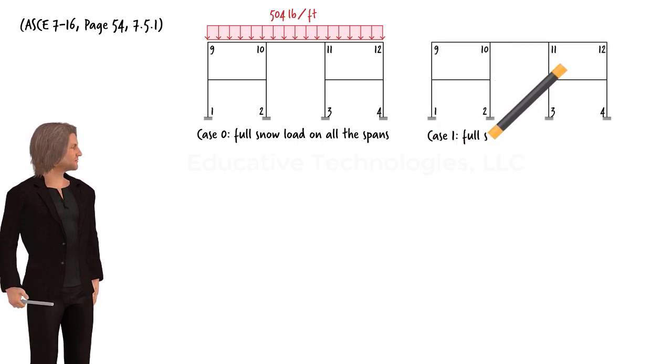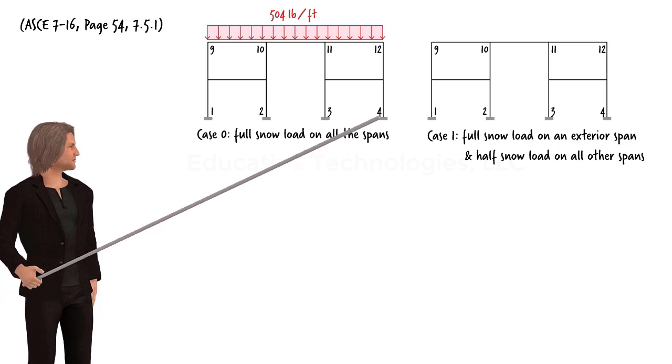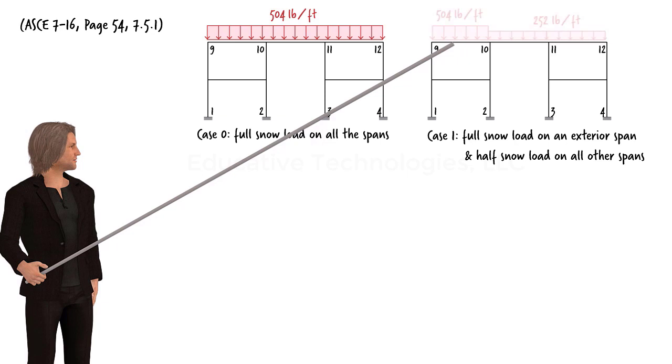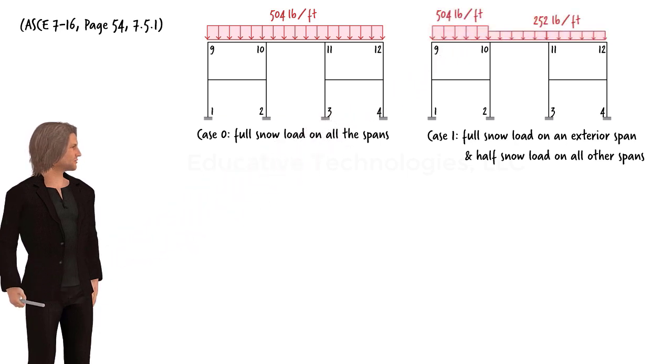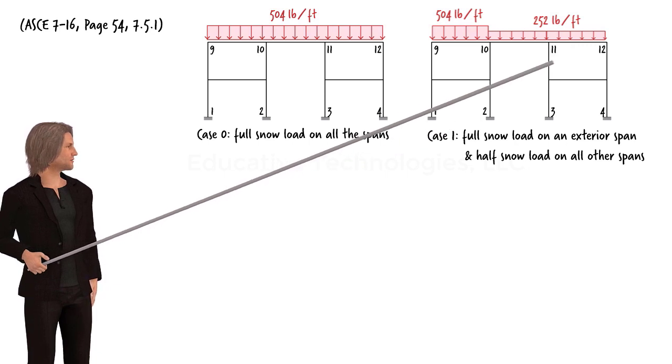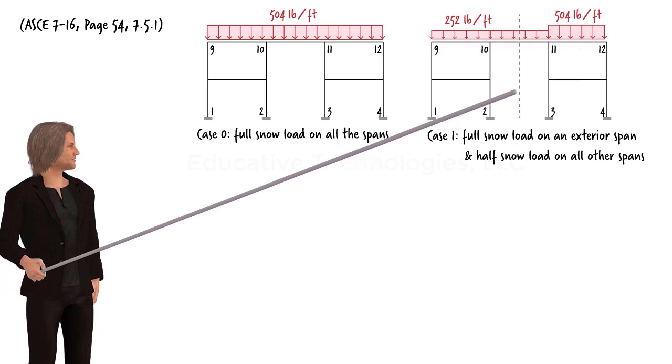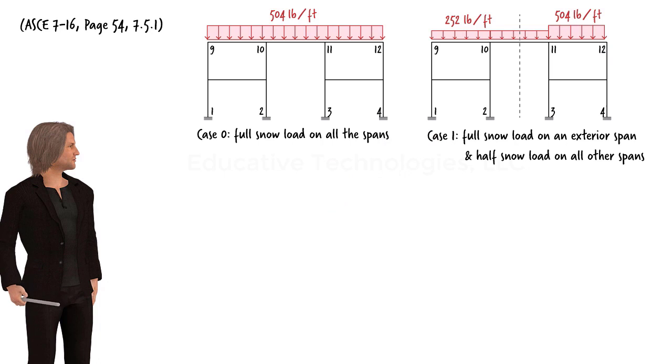Case 1. Full snow load is present on an exterior span, while all other spans carry half the snow load. If we take beam 9-10 as the exterior span, this loading scenario results. If we choose beam 11-12 as the exterior span, we get this loading scenario. Since the frame is symmetrical about this vertical centerline, we only need to analyze the frame under one of the two loading scenarios.